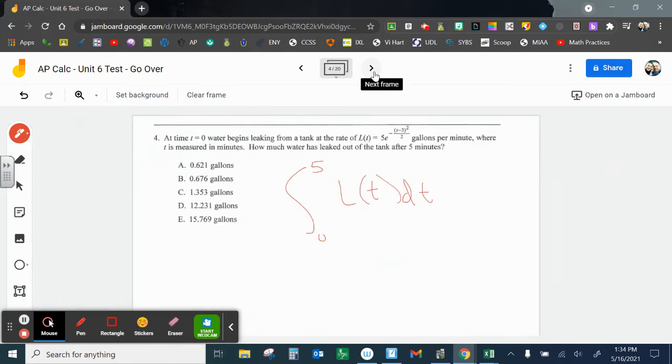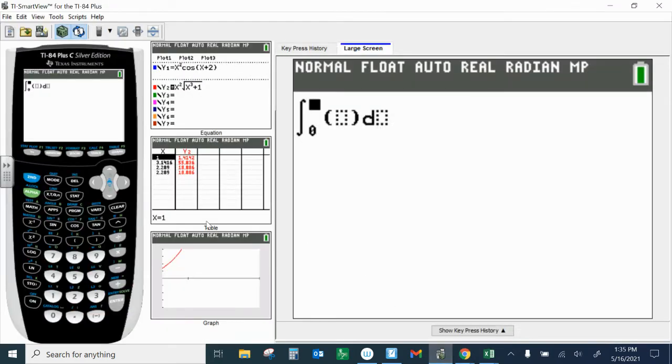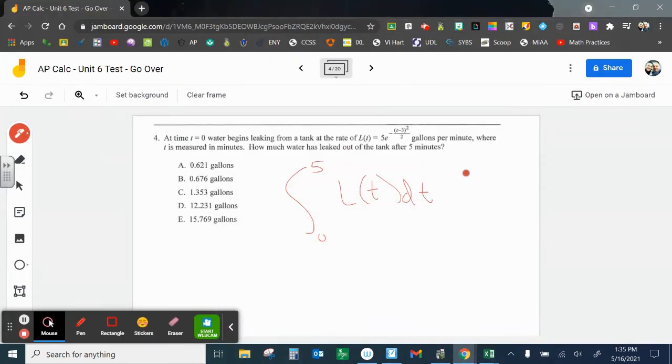Even though we have access to our calculator, nothing we can do there. Okay, here, this is just another calculator problem. Time equals 0, water begins leaking from a tank at the rate of L(t). And again, very complicated looking problem. We just need to put that into this integral problem, the integral from 0 to 5 of L(t) dt. So we just got to type that in. Let me see if I can get my calculator to work at all. Nope, not going to work. And then that's going to spit out our answer. Number 4 should come out to be D.